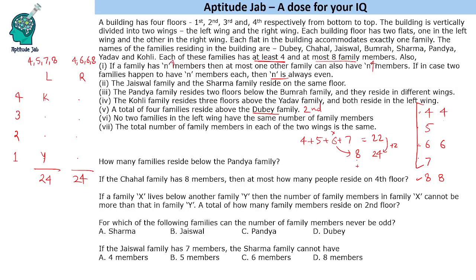Now let us fill in the family arrangement. Since four families reside above Dube, Dube is on the second floor. Jayaswal and Sharma are on the same floor, so they must be on the fourth floor — not on Dube's floor. Bumrah is placed on the fourth floor and Pandya is two floors below in a different wing, placing Pandya on the second floor. The remaining family, Jayaswal, fills the last remaining spot. This completes the arrangement of family names, though the member counts per family within each wing are not yet individually fixed.